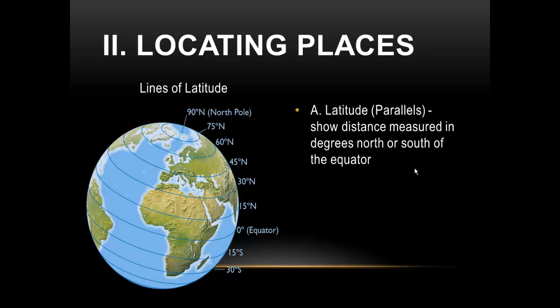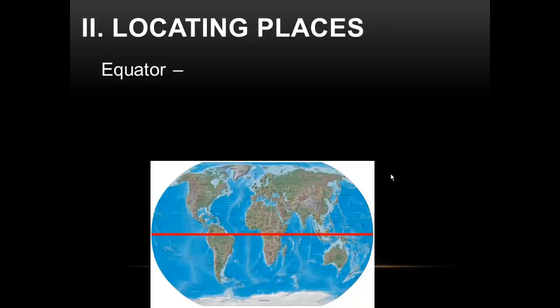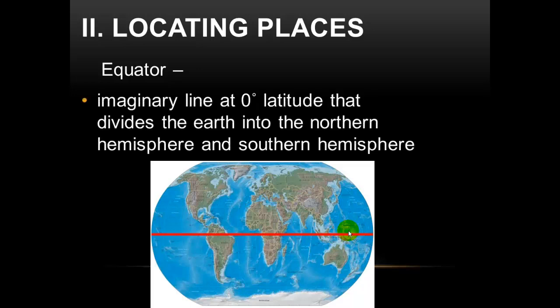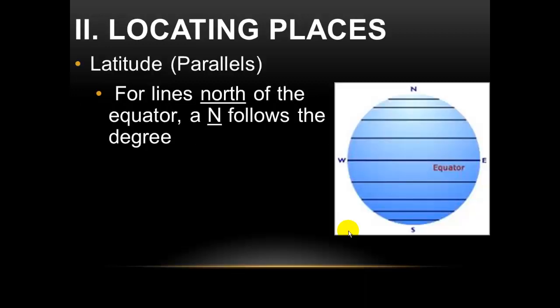Back to latitude — lines of latitude, or parallels. They show distances measured in degrees north or south of the equator. Looking at the globe, you'll see this red imaginary line — this is the equator. It cuts the Earth in half. It is located at zero degrees latitude. The equator is an imaginary line located at zero degrees latitude that divides the Earth into the northern hemisphere and the southern hemisphere.